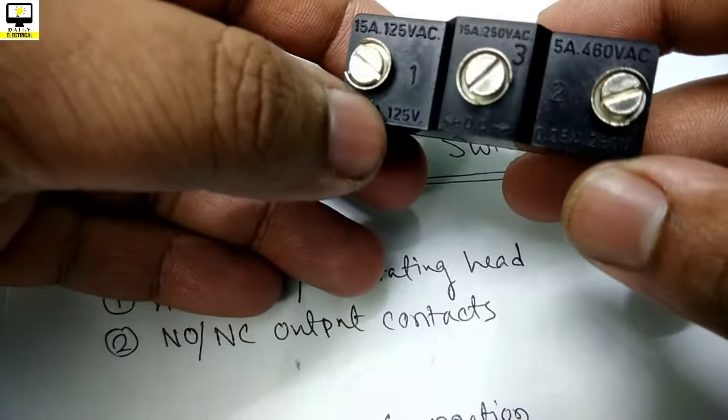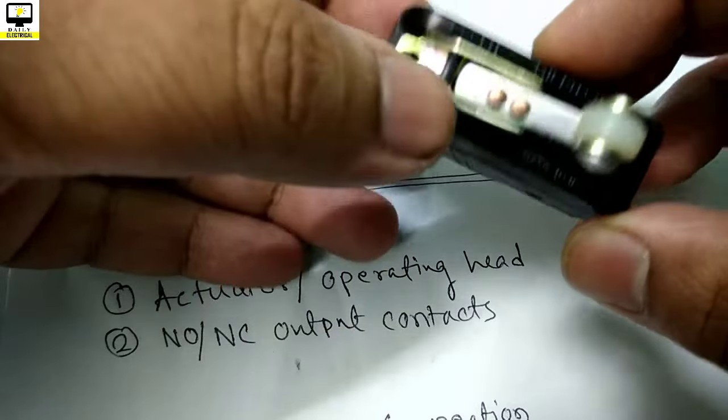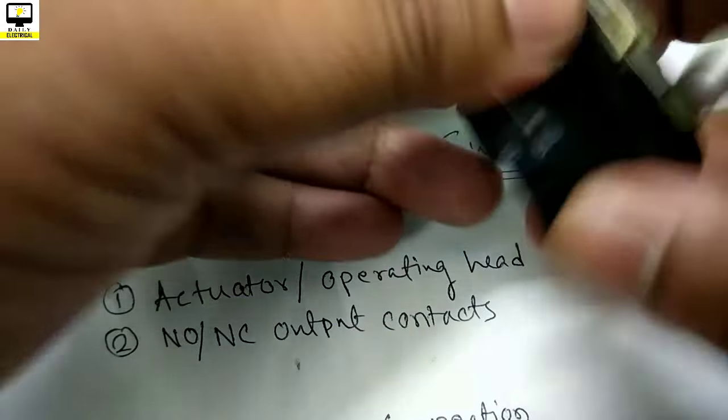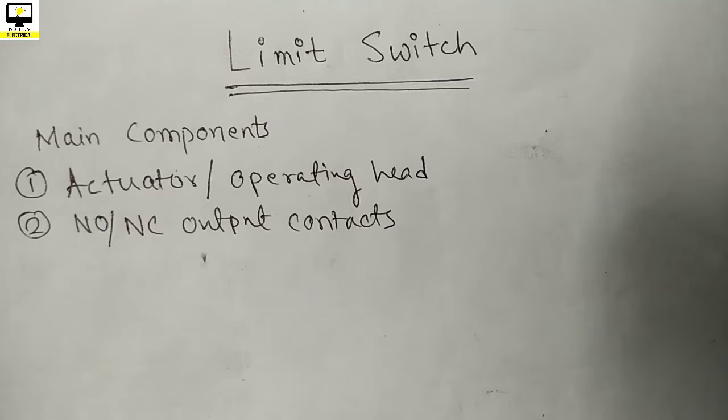Let us discuss the working principle and operation in detail. As you can see, there are two main components used in a limit switch. Number one is the actuator which detects the pressure of a moving object and senses it by a mechanical way. It is also called operational head. And number two is NO NC electrical outputs. We can get the output from the two terminals given in the back side of the limit switch.